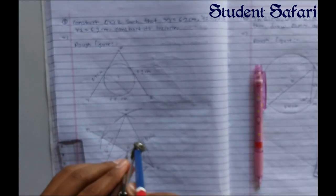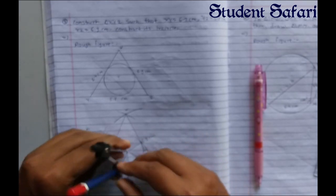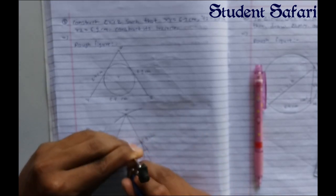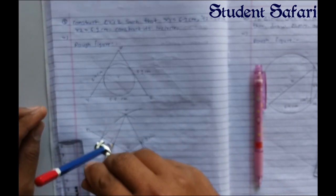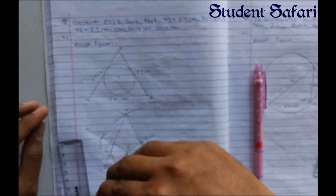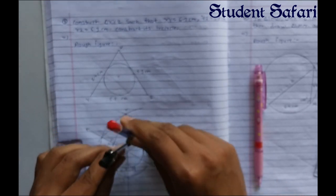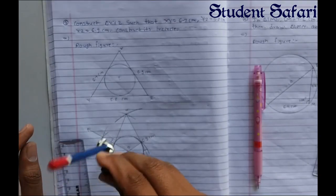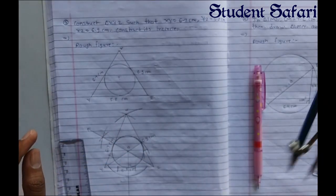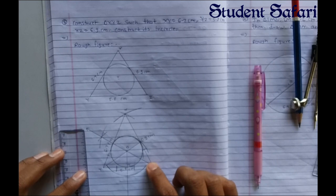All the perpendicular measurements are equal. This is our incircle of triangle XYZ.